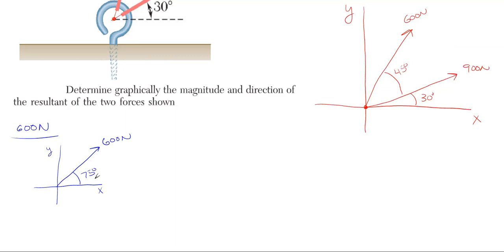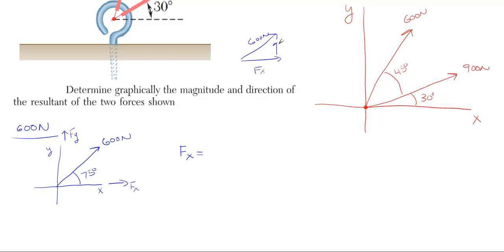Breaking it up into its x-y components, we have to determine which way the x and y are going — it always depends on which way the main force is going. The 600 newtons is going up and to the right, so my y component will be going upwards and my x component will be going to the right. This forms a little right triangle where we have the 600 newtons as the hypotenuse, fx adjacent, and fy opposite, with an angle of 75 degrees inside.